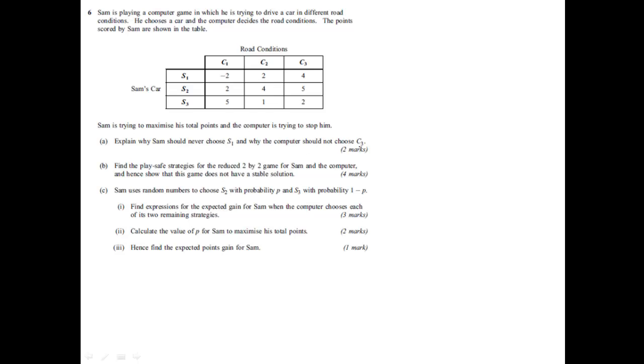The first question asks to explain why Sam should never choose S1 and why the computer should never choose C3. Well, we only never choose a strategy if there's another strategy, an alternative strategy, that is always better or at least as good.